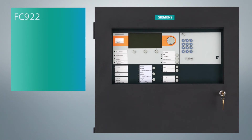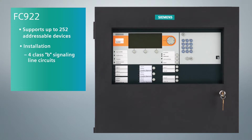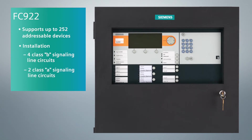The FC922 is part of the Cerberus Pro compact networkable fire alarm system portfolio. There are two versions available. The first, model FC922, will support up to 252 addressable devices which can be installed on four class B signaling line circuits or two class A signaling line circuits.